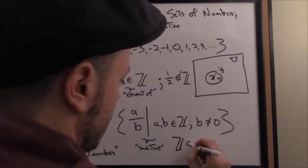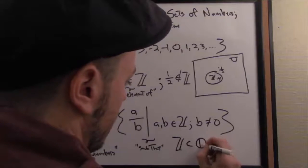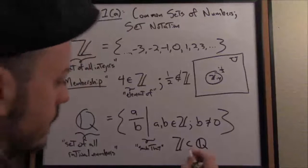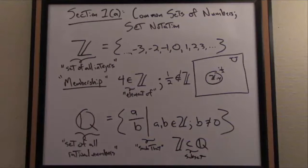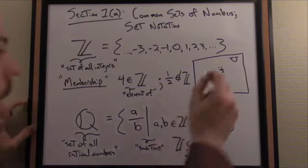The way that's written in set notation is that you would say the integers are contained inside of the rationals. This notation is called a subset, or you can think of containment. We would say Z is a subset contained within the rationals.